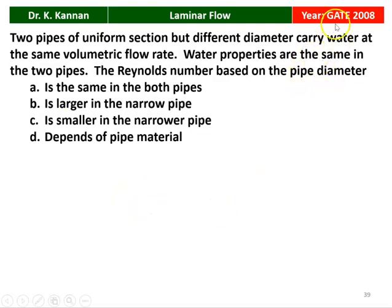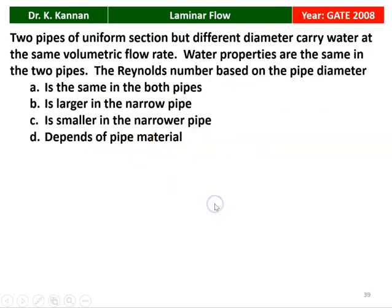The next question is from the GATE 2008 question paper. Two pipes of uniform cross section with different diameters carry water at the same volumetric flow rate. The water properties are the same in the two pipes. The Reynolds number based on pipe diameter — among four options — the correct option is: it is larger in the narrower pipe.